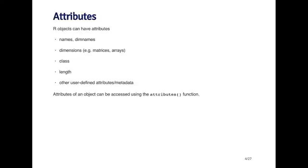Some of the most common types of attributes that we'll encounter are names, or dim names for dimension names. Dimension, so a matrix will have dimensions. For example, it'll have a number of rows and a number of columns.